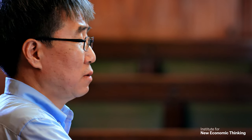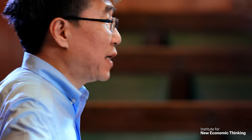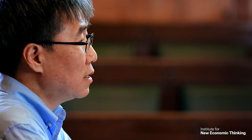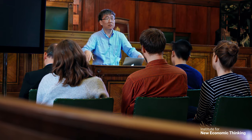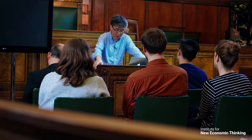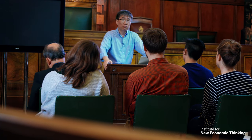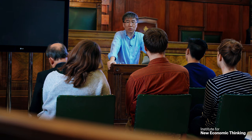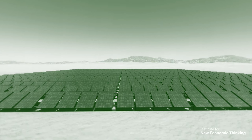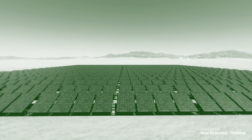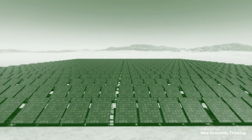In Germany, the government gave subsidies to consumers to adopt solar technology, which expanded the market, made investment in technological development profitable, and companies started doing research to develop better solar technology. The Chinese government gave a lot of subsidies to producers of solar panels to reduce costs, and now solar electricity technology in China rivals that of the most advanced nations.